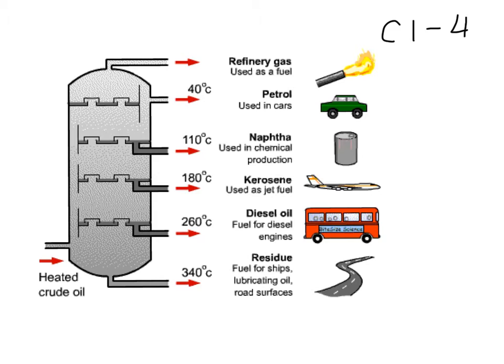The next fraction we take out, usually between 30 degrees and 125 degrees, look at these temperatures as ballparks. The petrol chains are slightly longer, so we're looking at five carbons to eight carbons in length, and this is the petrol that we use in our cars.